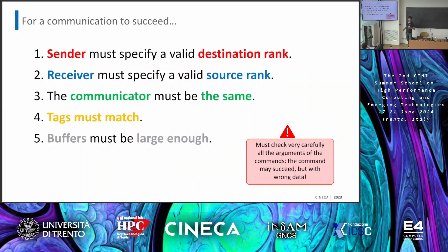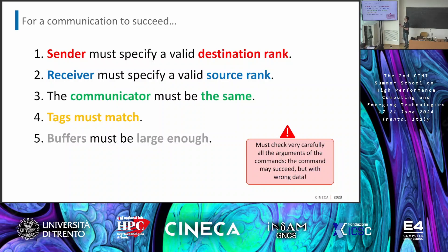For a communication to succeed: the sender must specify a valid destination rank, the receiver must specify a valid source rank, the communicator must be the same (MPI_COMM_WORLD in our examples), and the tags have to match. The buffer must be large enough — there is the risk that I am sending a certain amount of data but the receiver is ready to receive it in a shorter buffer, and there may be a problem. The command may succeed but give the wrong data. Check very carefully the arguments of the command.